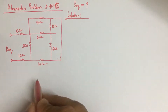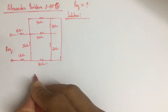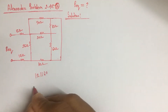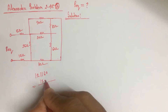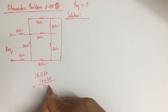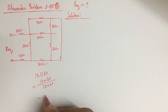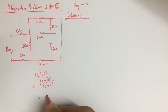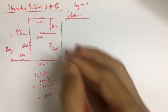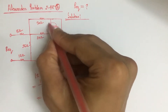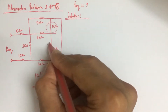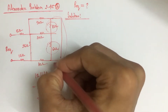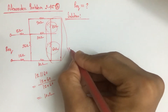So, if we replace the 12 ohm and 60 ohm parallel resistance, we get 10 ohm. The equivalent resistance of 12 ohm and 60 ohm in parallel is 10 ohm.